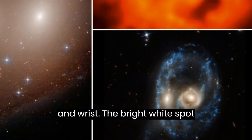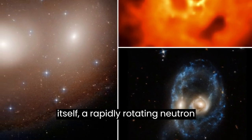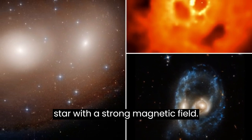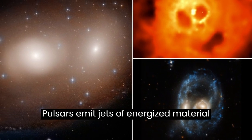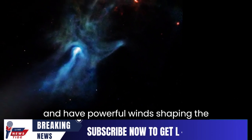The bright white spot at the base of the palm is the pulsar itself, a rapidly rotating neutron star with a strong magnetic field. Pulsars emit jets of energized material and have powerful winds, shaping the nebula.